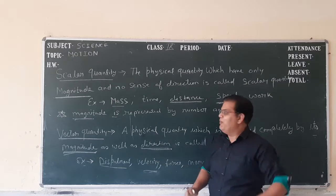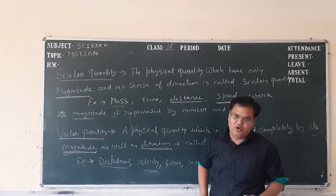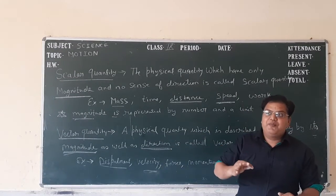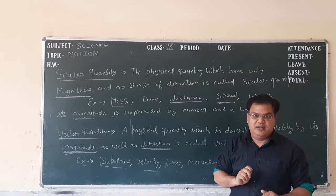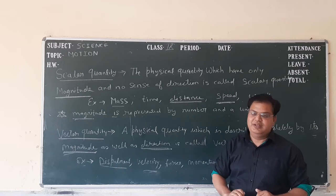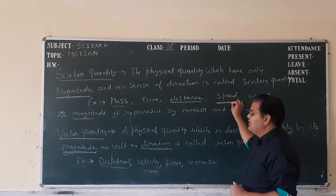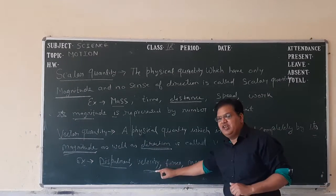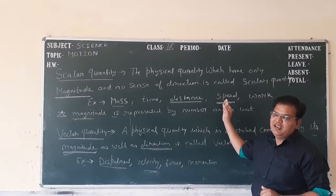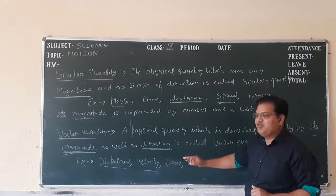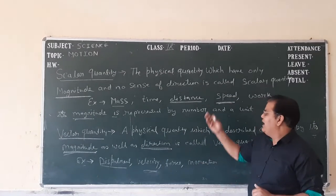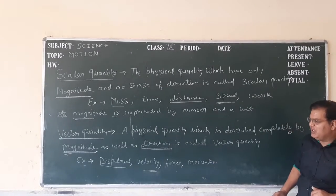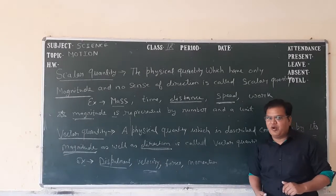For example, 4 kilometers in south direction — that is displacement. But distance gives you only 4 kilometers. Velocity gives you direction — it means 5 kilometers per hour in south direction. But speed gives you only 5 kilometers per hour. Velocity gives us direction and speed gives us only magnitude. Force is another example of vector quantity and momentum is another example of vector quantity.